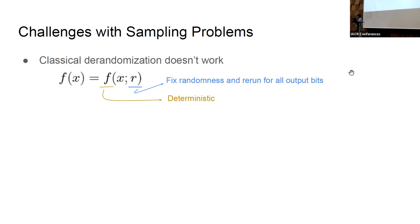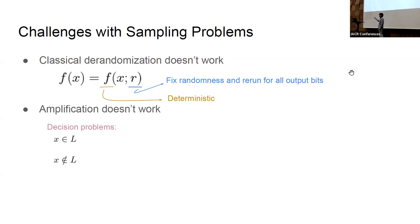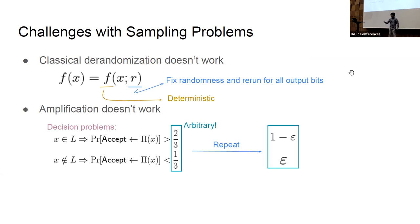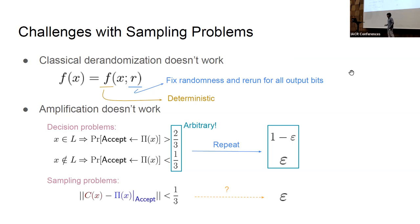Issue number two is also a reason why we only achieve inverse-polynomial error: amplification does not work. For decision problems, a yes-instance has high probability of getting accepted and a no-instance has near-zero probability, and by repeating the protocol you can amplify these arbitrarily. But for a sampling problem, if you have a protocol with soundness error one-third, it is unclear how to run the protocol repeatedly as a black box and reduce that error to epsilon.